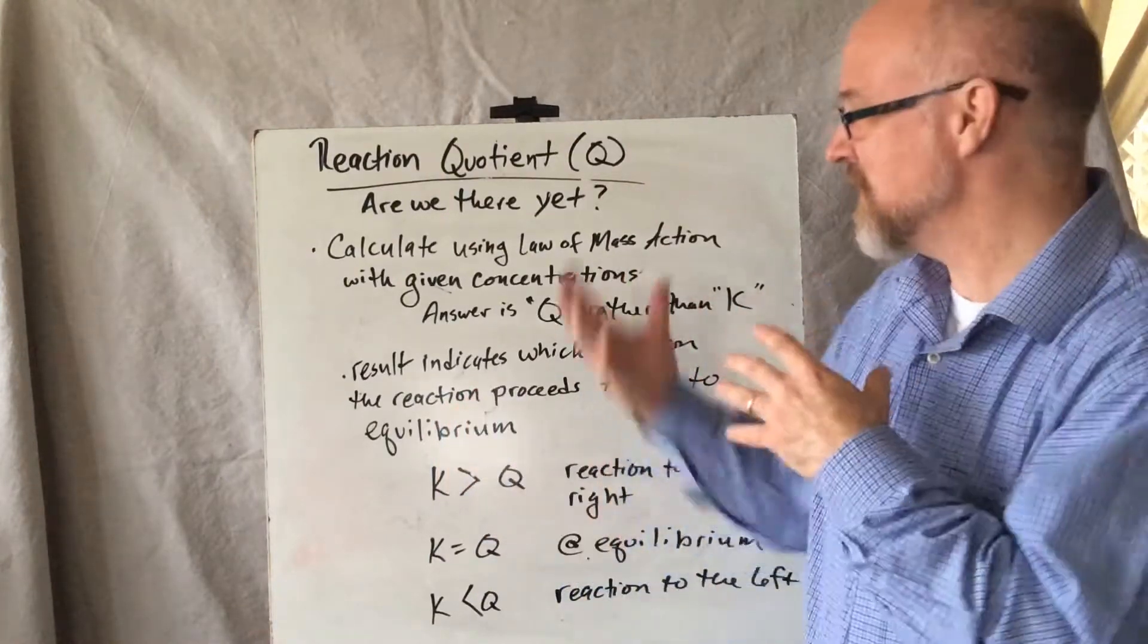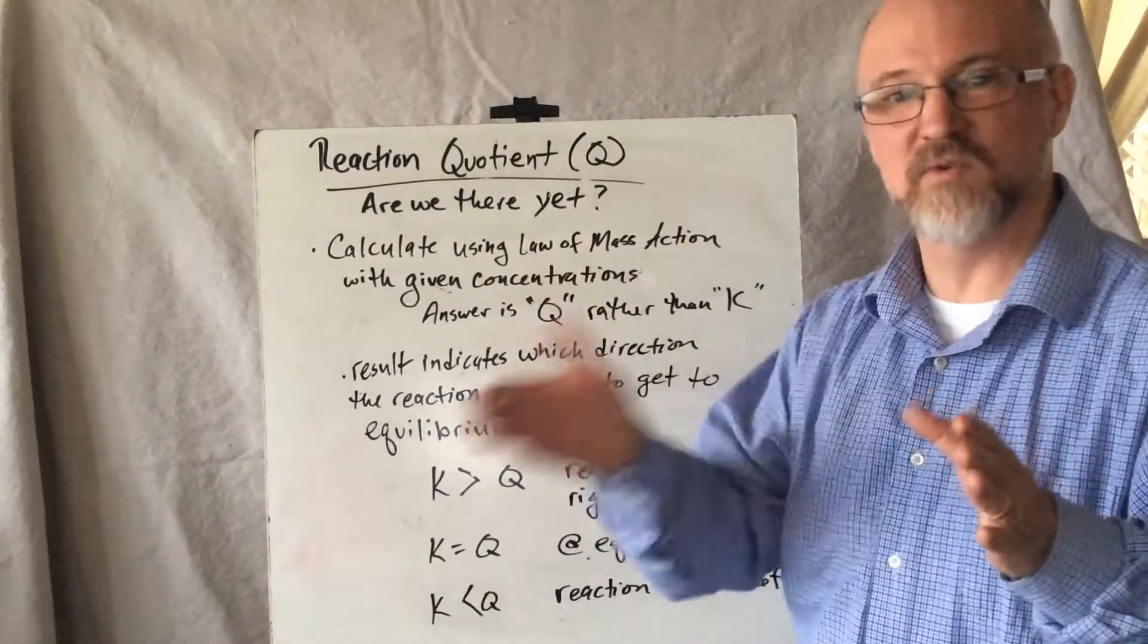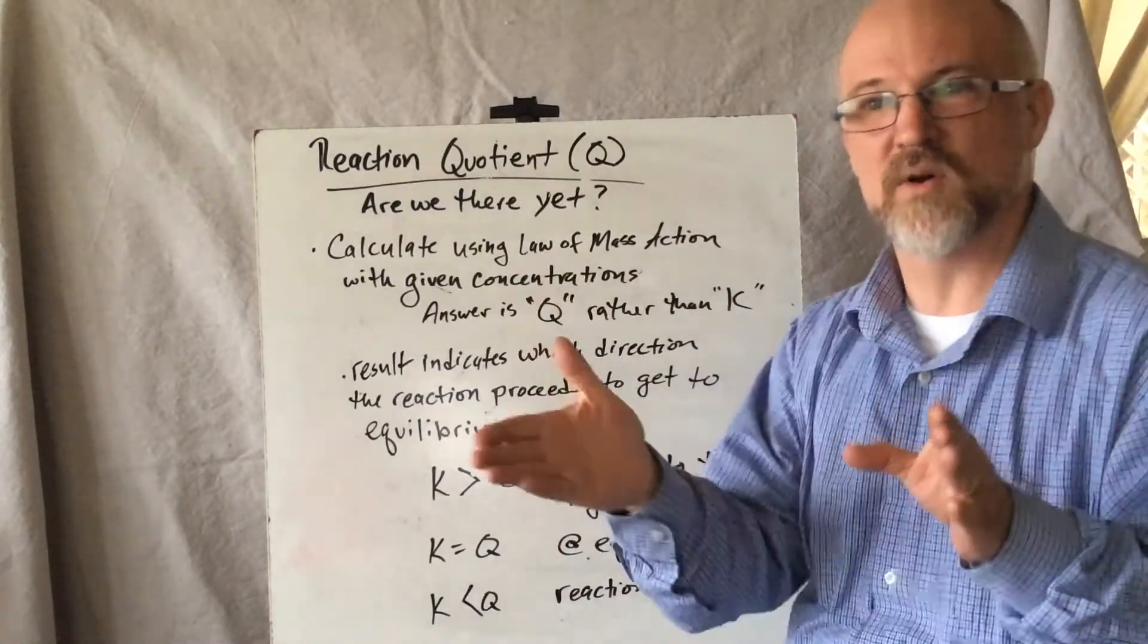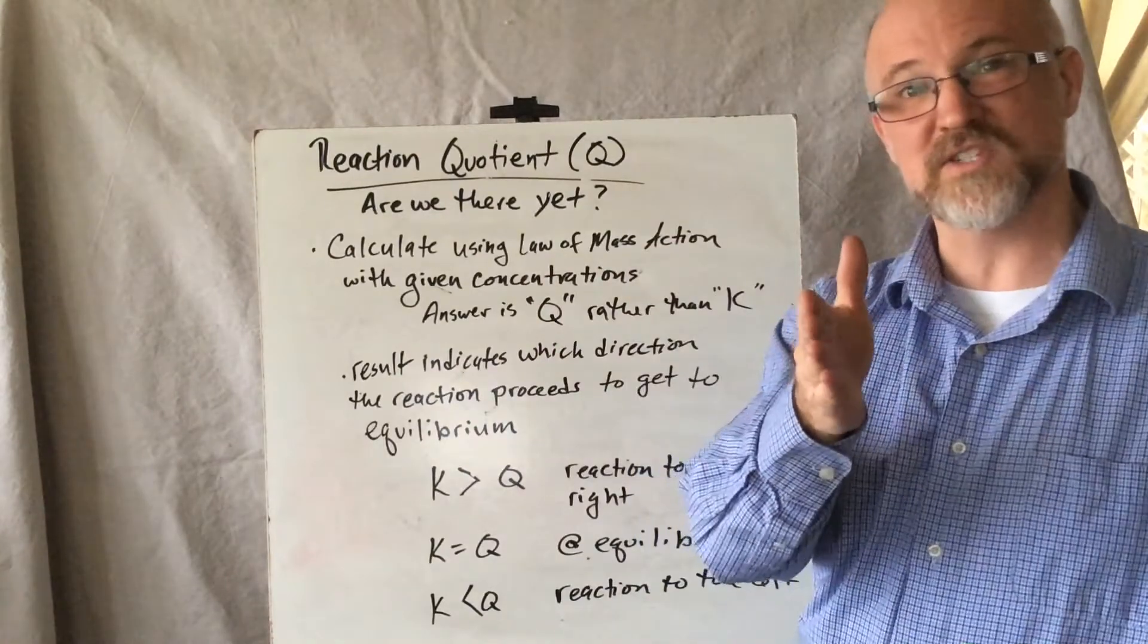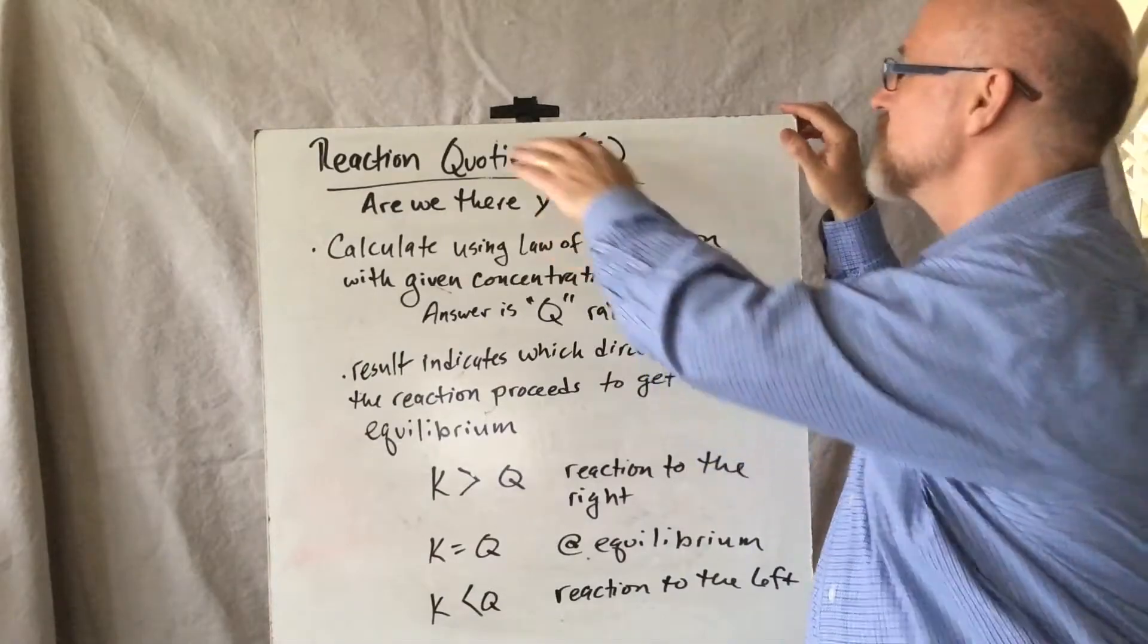So we do the math and we figure out, well, where are we relative to K? Are we there yet? Have we reached equilibrium? Are we going towards equilibrium? Are we on the other side of equilibrium and have to go back to get it? Let's look at an example.